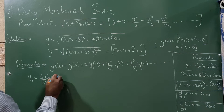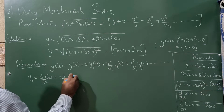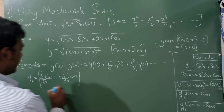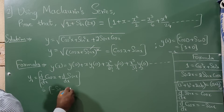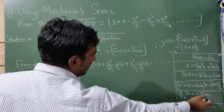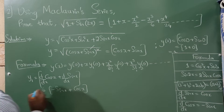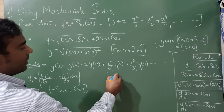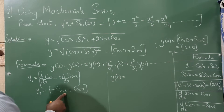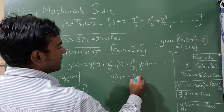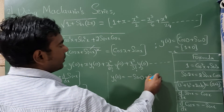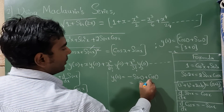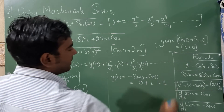Differentiating y, we get y₁ = d/dx(cos x) + d/dx(sin x) = −sin x + cos x. Evaluating at x = 0: y₁(0) = −sin(0) + cos(0) = 0 + 1 = 1.